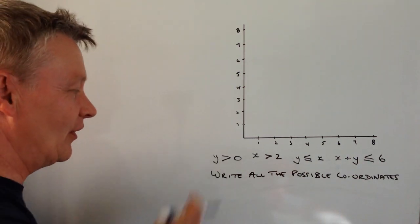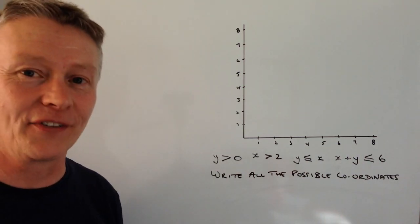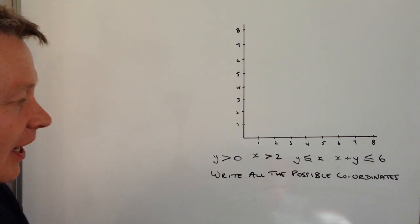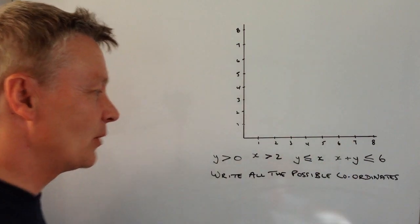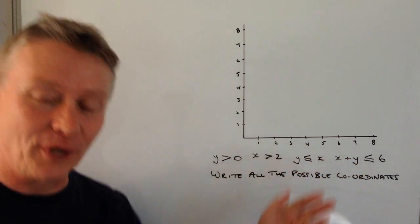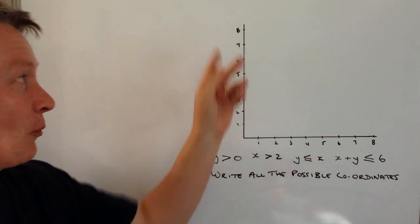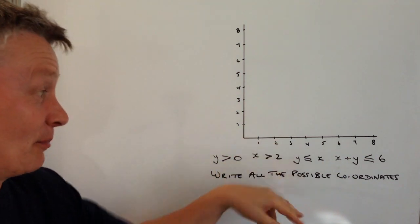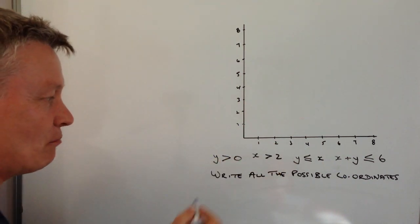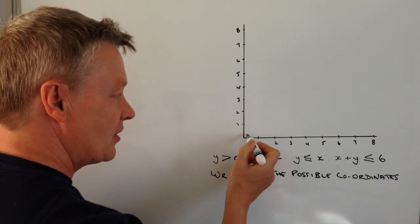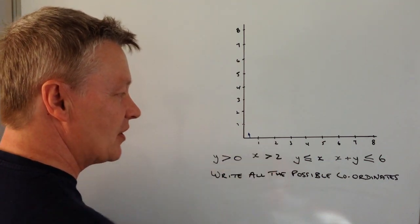So the first one is we've got the line y is greater than zero. Well the line y equals zero is along this, in other words we can go along the x coordinate but we can't go up into the y coordinates up or down. So y is greater than or equal to zero means that the inequality is going to be above this line here.